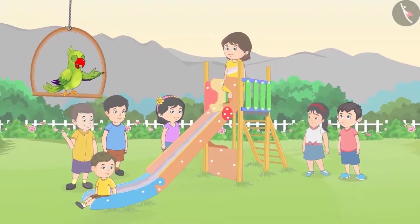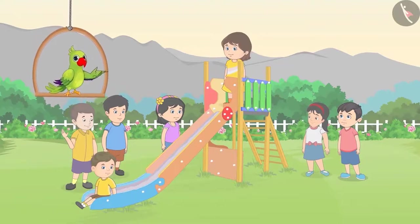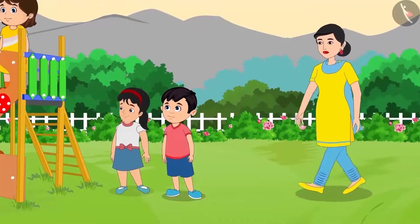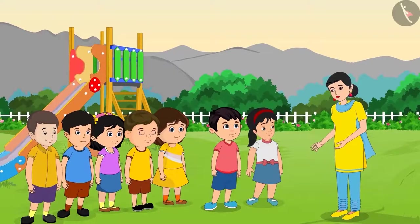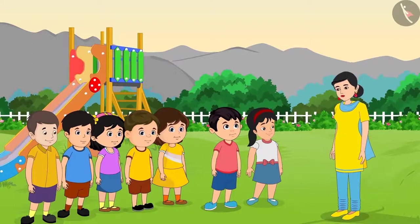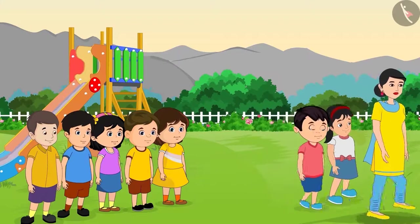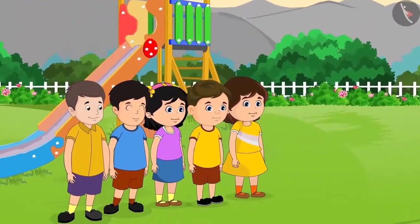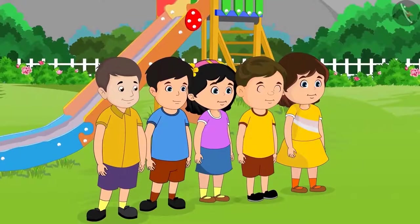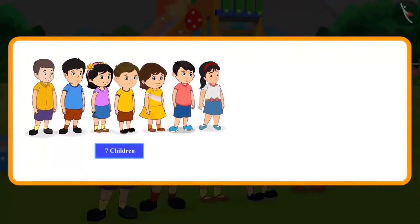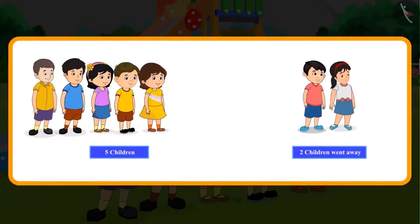It is evening time and Chotu and Pinky are playing with five of their friends in the park. So, children, can you tell me how many children are playing in total? Yes, five and two — that means seven children. Chotu and Pinky's mother comes to take them home. Chotu and Pinky, come, let's go home quickly. Uncle has come to meet you. Okay, let's go, Mommy. Bye, friends. Pinky and Chotu go back home with their mother. Now, can you tell me how many children are left in the park? Out of seven children, two children went away, so there are five children left. You had the same answer, right? Very good.